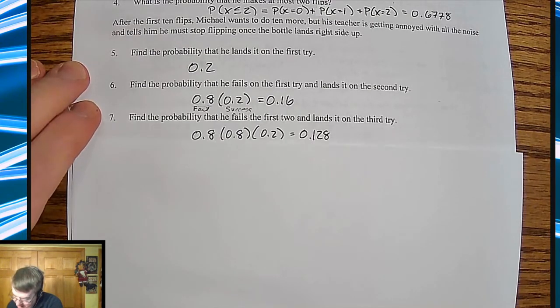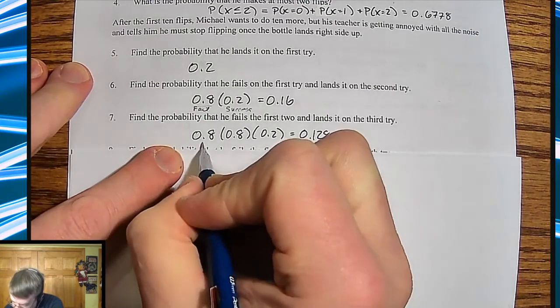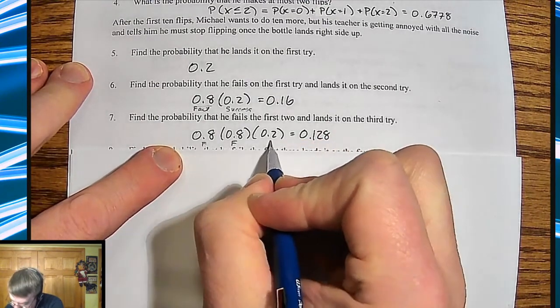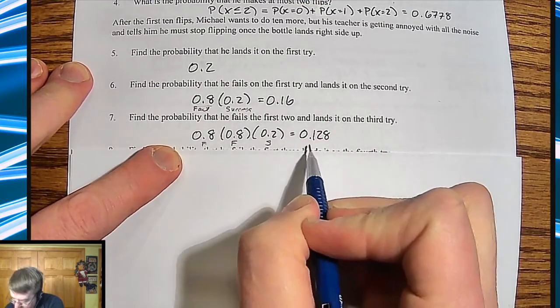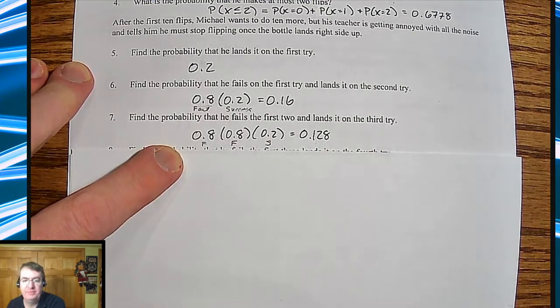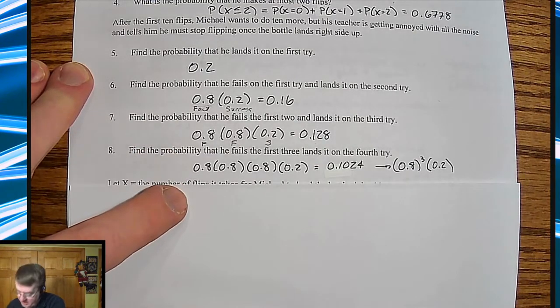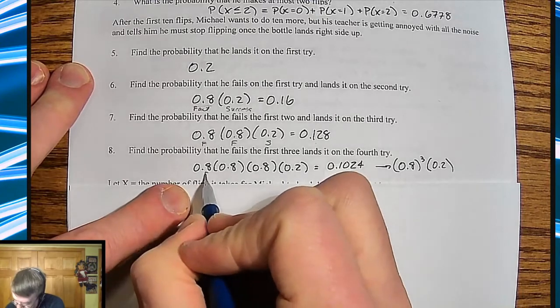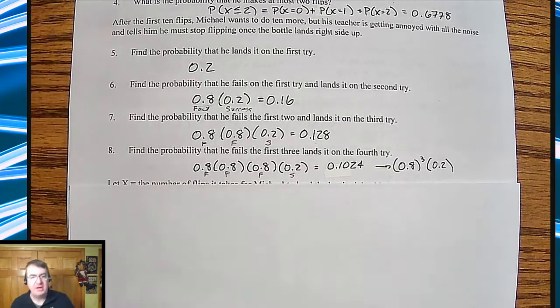What happens if he fails on the first two? So again, notice fail, fail, success. So we multiply all that out, get 12%. And then over here, what happens if it takes three turns? Fail, fail, fail. You seeing a pattern yet?